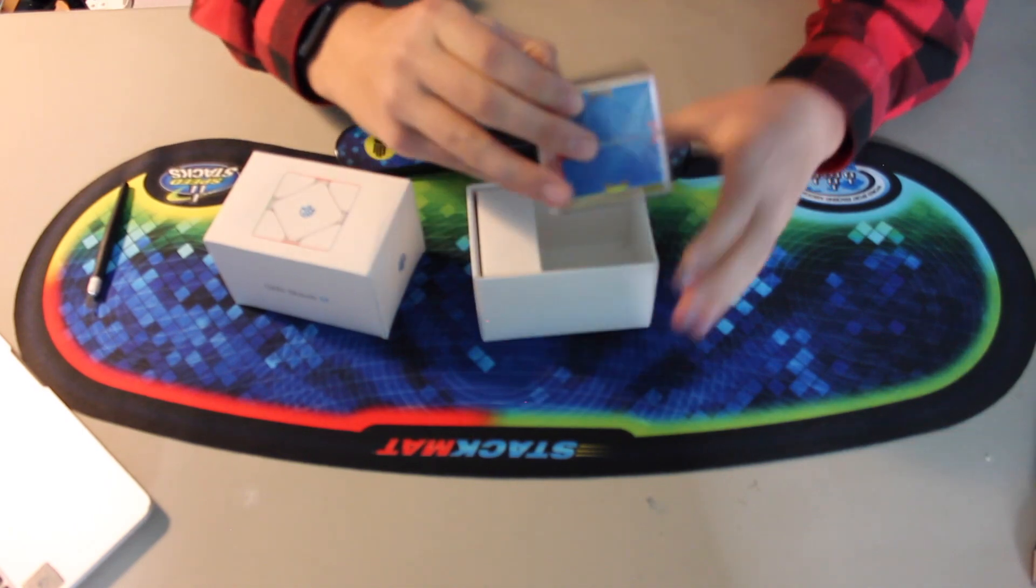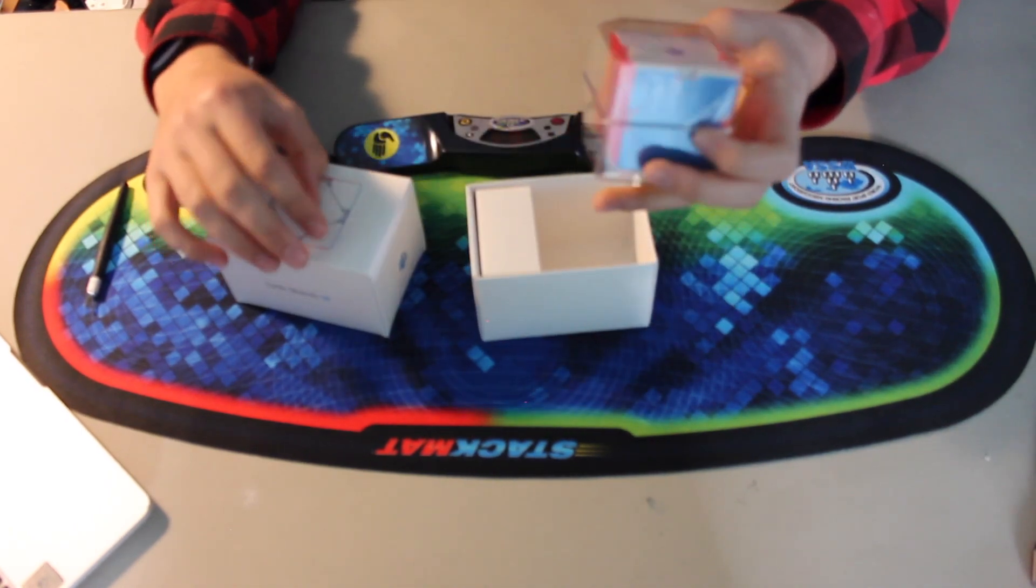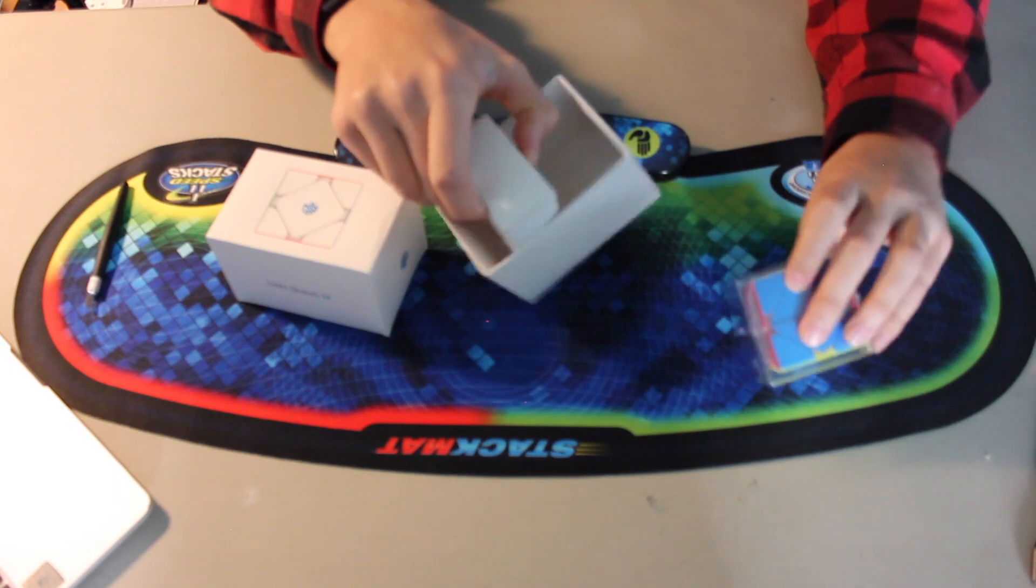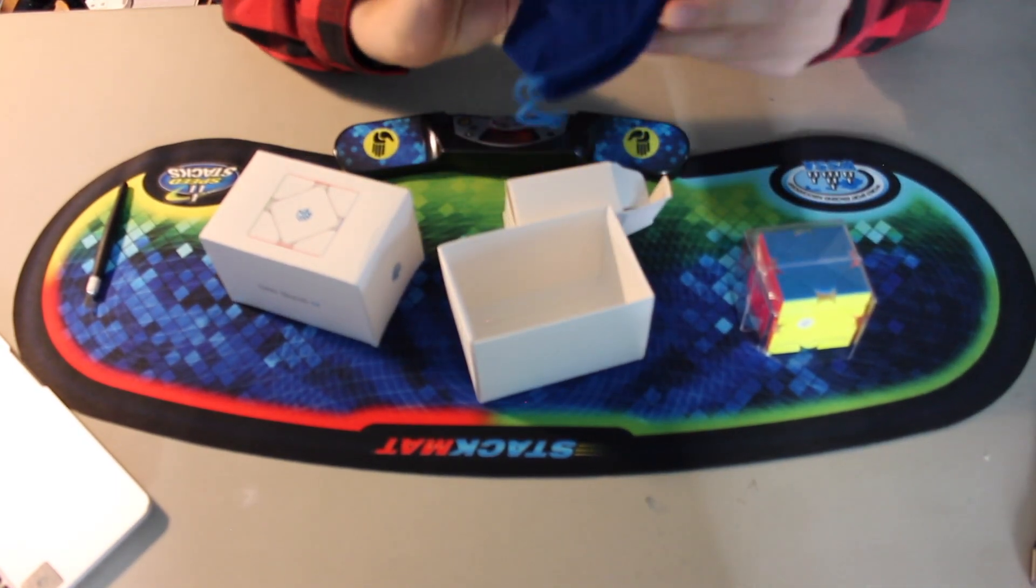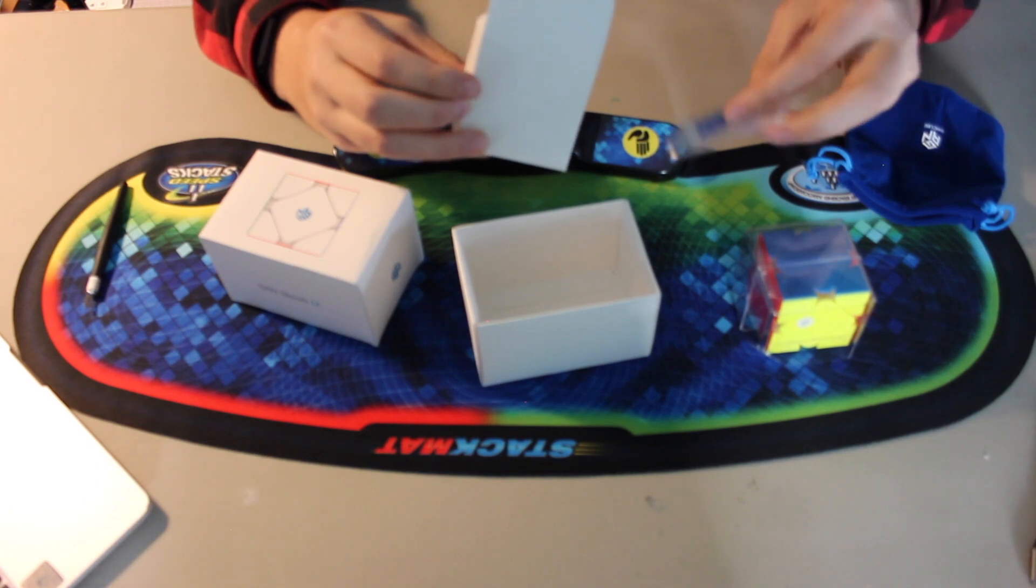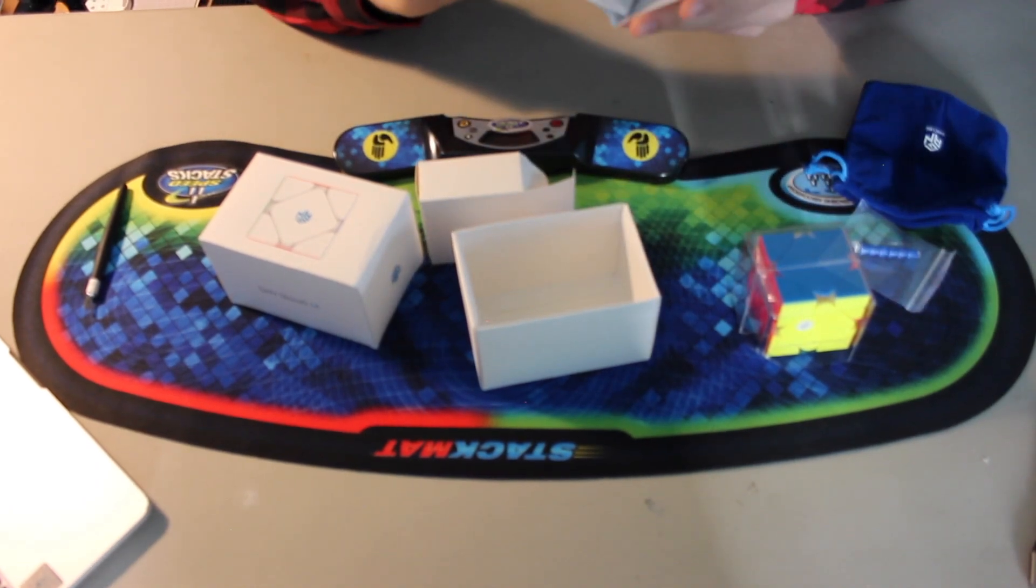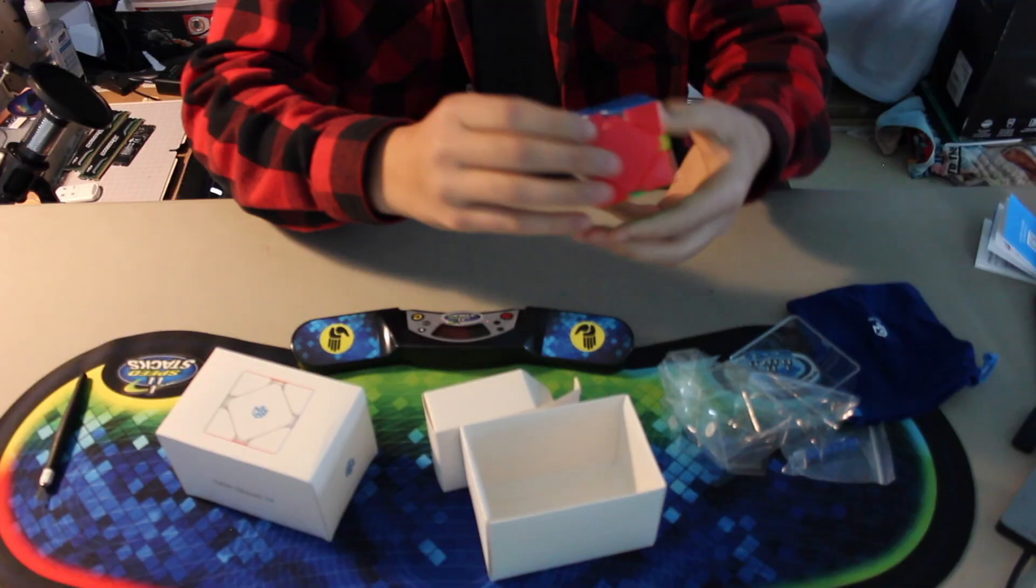Alright, so before we get into this expensive piece of plastic here, first we're going to take a look at the accessories. So, looks like there's a GAN bag, and a tensioning tool, and a GAN skewb. Now let's take a look at the skewbs.